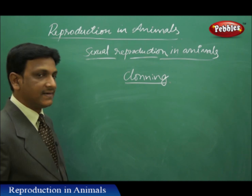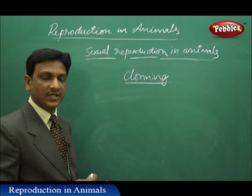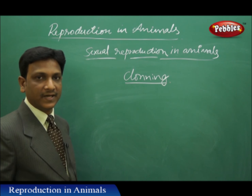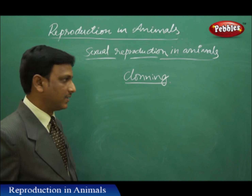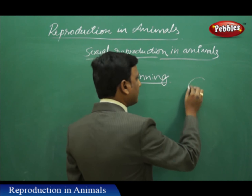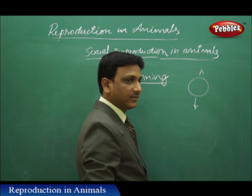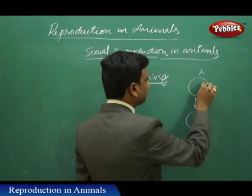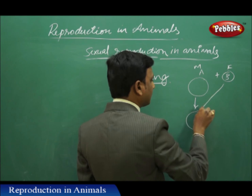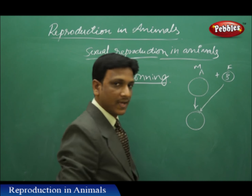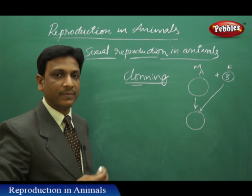Cloning is a very interesting process observed in reproduction. It is a special way of reproduction done in lab conditions to produce animals which are identical to the parent. In normal reproduction, the offspring will have characteristics of both parents — the male and female. But by the process of cloning, we can produce exact copies of organisms.